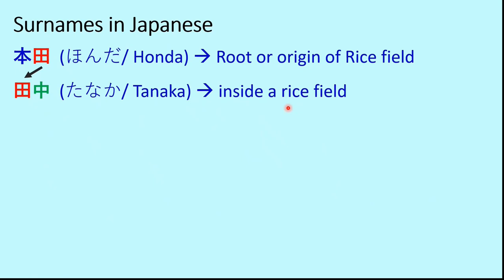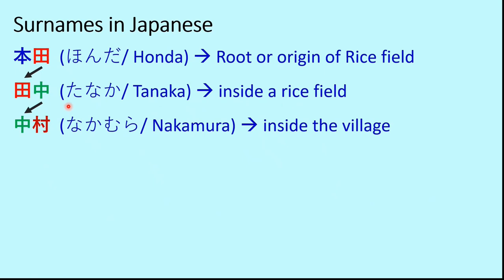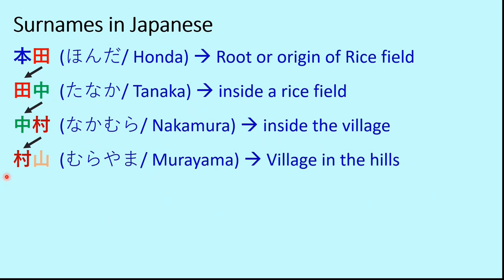Third, we have Nakamura. Here 'naka' comes at the beginning of the word and 'mura' means village, so Nakamura means 'inside the village.' People living in villages used this combination as their surname and it became known as Nakamura. Then we have Murayama — 'mura' means village and 'yama' is the kanji for hills or mountains — so Murayama means 'village in the hills.'